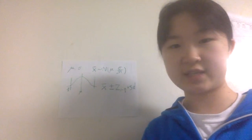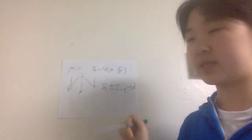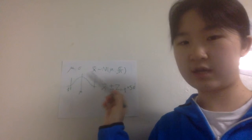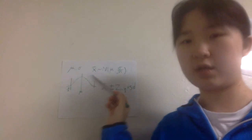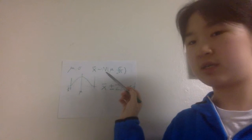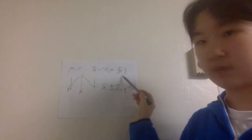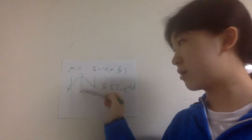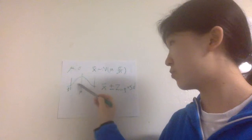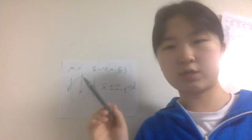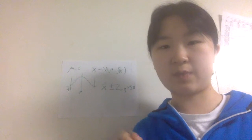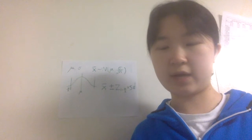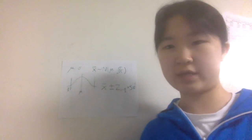If we take a sample of size n and compute the sample mean x-bar, we know that by the central limit theorem, if n is large enough, then x-bar will follow a normal distribution with center at mu and standard deviation of sigma over square root of n. If we draw a normal distribution plot, the center will be mu and the standard deviation is sigma over square root of n. We want to construct a confidence interval based on x-bar to get an interval estimate for the population parameter mu.